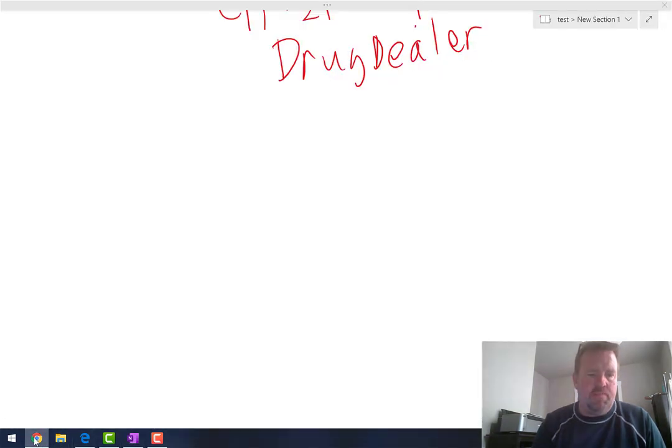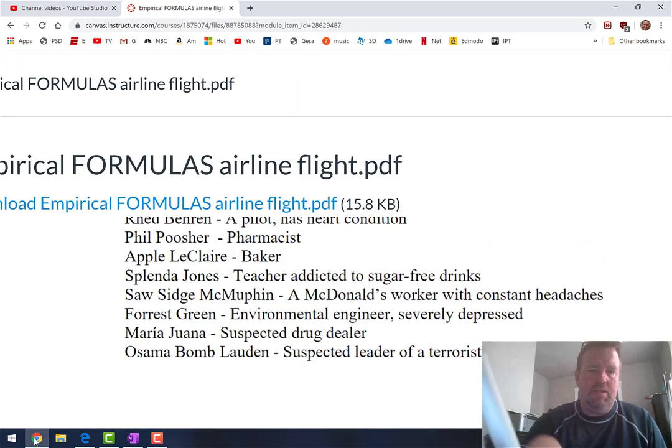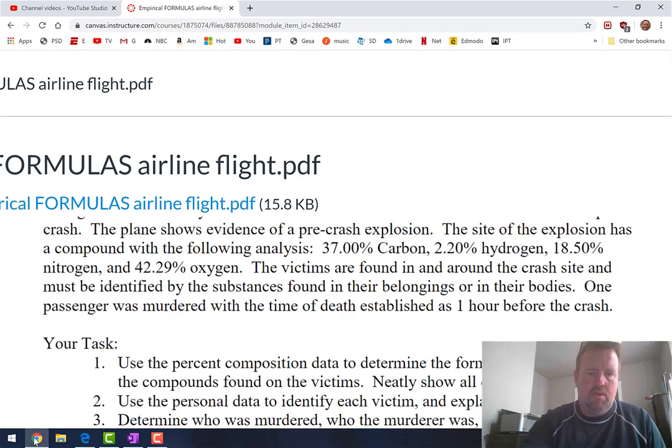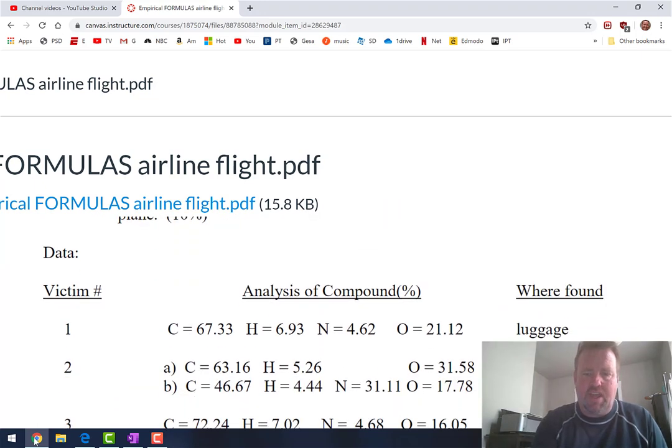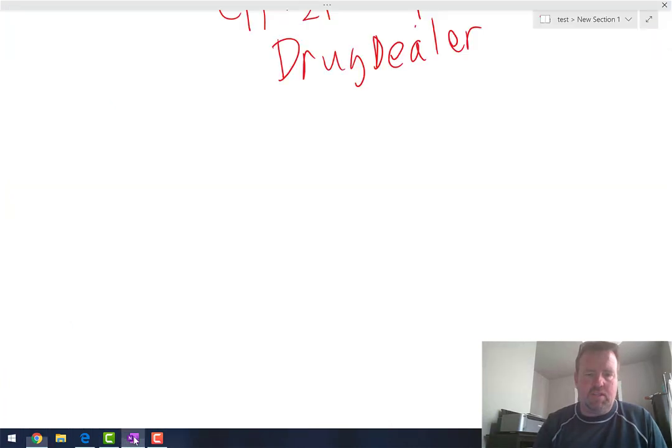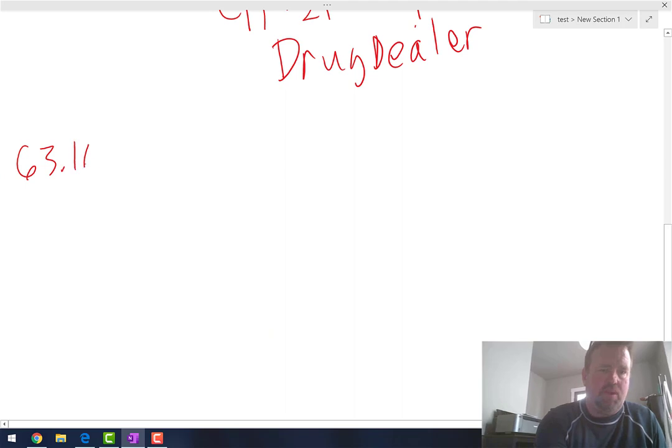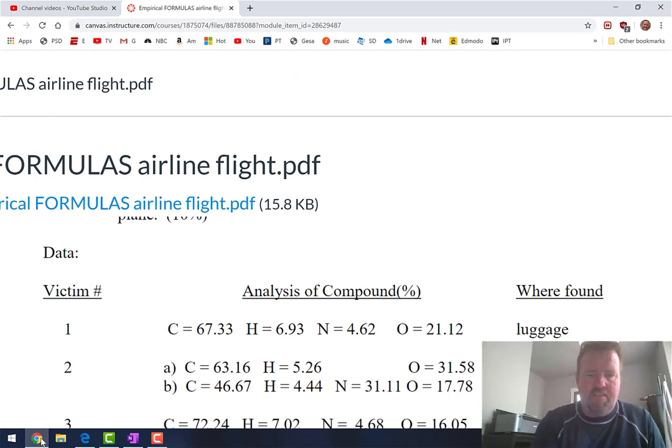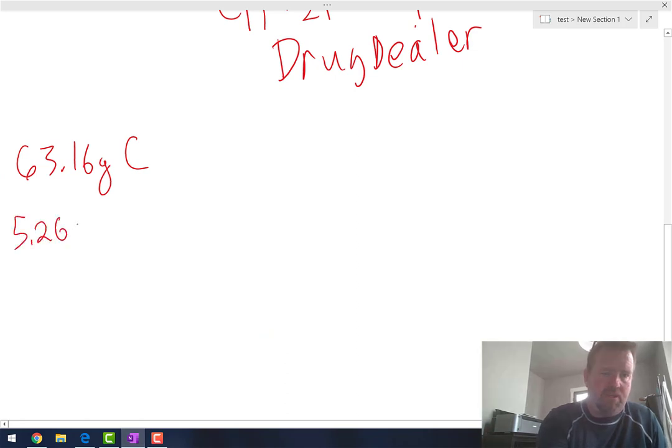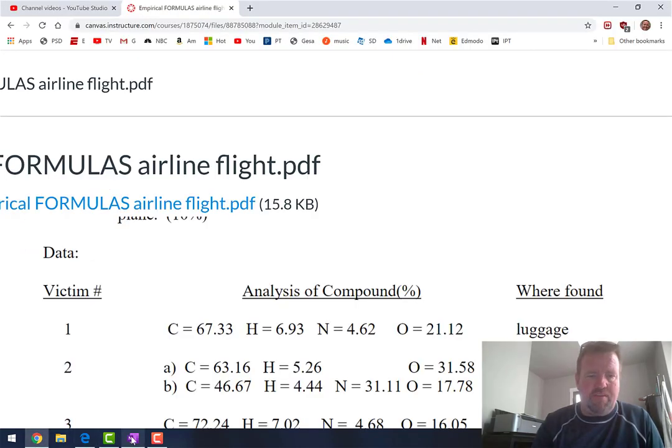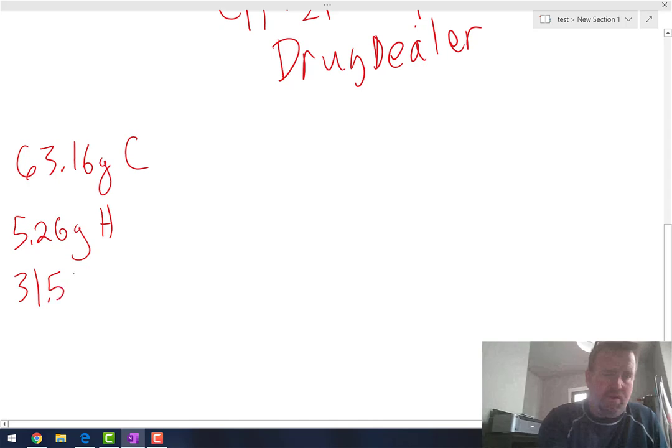So number two says, this one doesn't have any oxygen in it. So 63.16% is carbon. So 63.16 grams, remember, not percents, is carbon. And then 5.26% is hydrogen. So 5.26 grams of hydrogen. And then the last one is 31.58, 31.58 grams of oxygen.